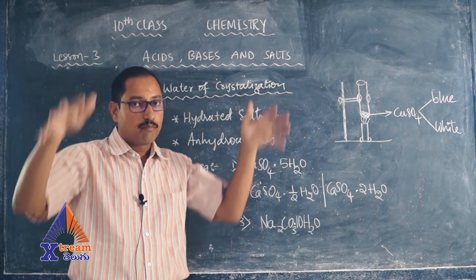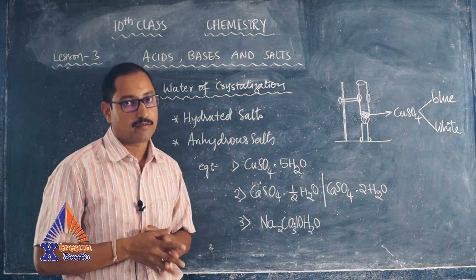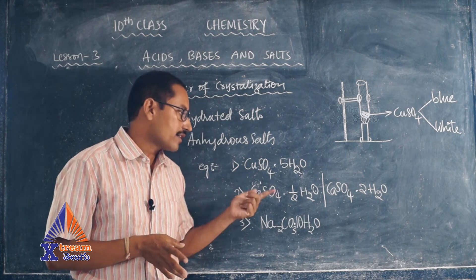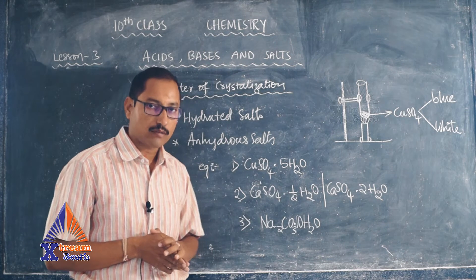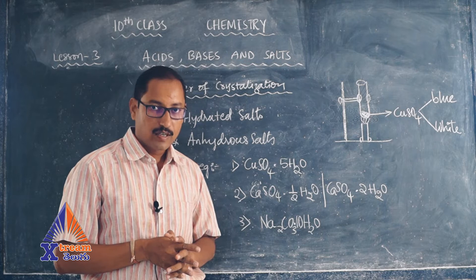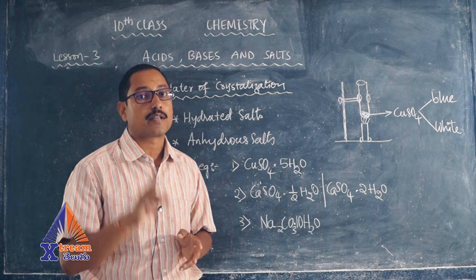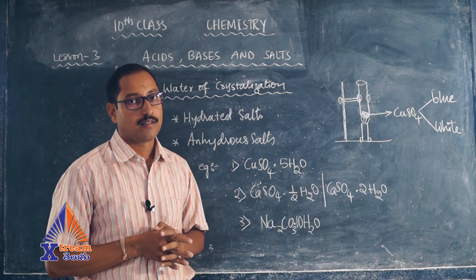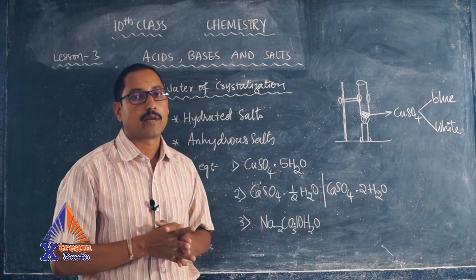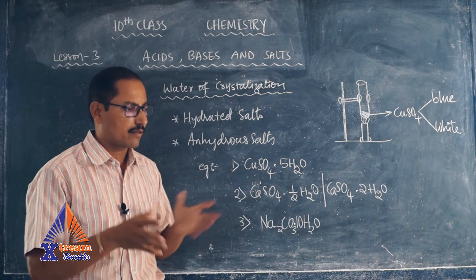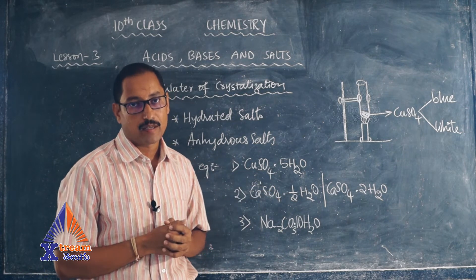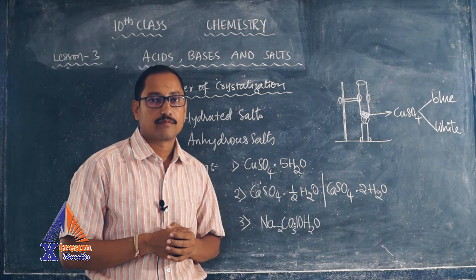The next one is calcium sulfate. Calcium sulfate can have half a molecule of water or two molecules of water. If it is having half a molecule of water, then it is called Plaster of Paris (POP). Plaster of Paris is used for false ceiling, making idols like Ganesh idol, Durgamatha idol, or toys.